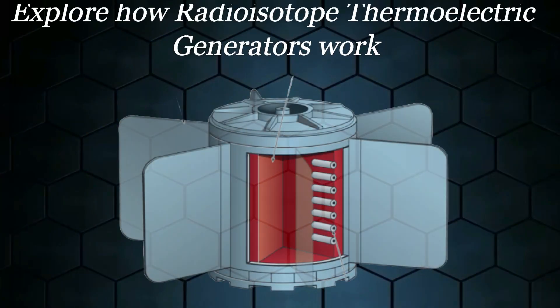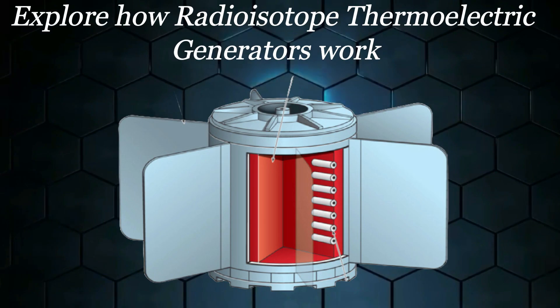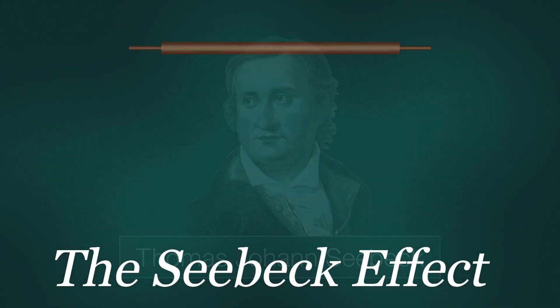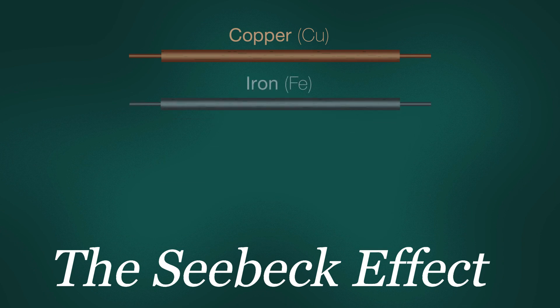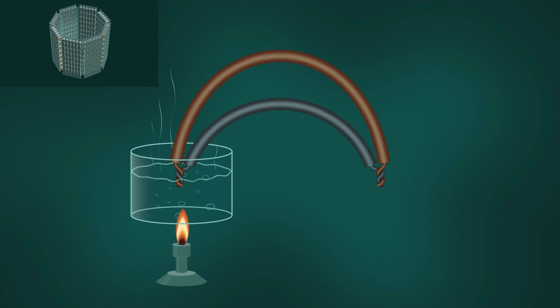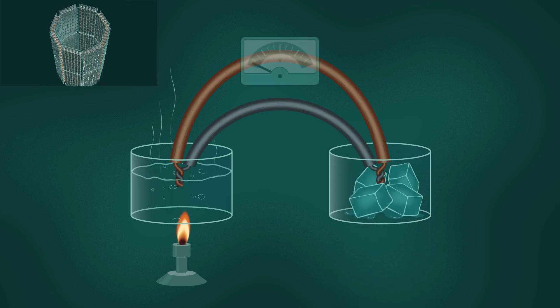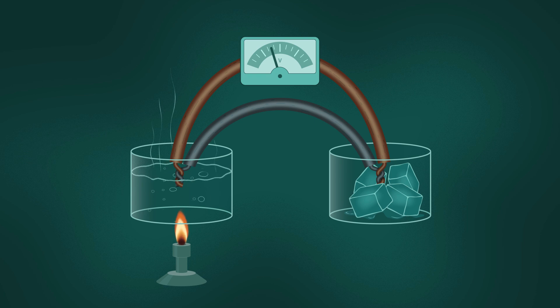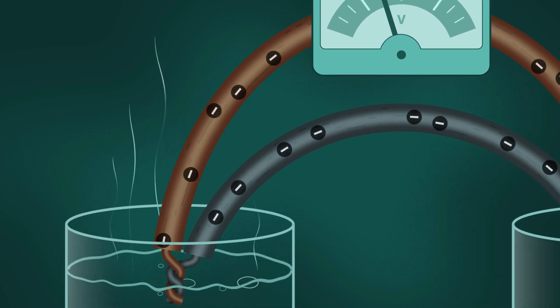Explore how radioisotope thermoelectric generators work. We now call this process of producing electricity the Seebeck effect. Today, we use the term thermocouple to describe the hundreds of small pairs of junctions made from different conducting materials that take advantage of this property. We now know that the greater the difference in temperature between the hot side and cold side, the greater amount of power that can be generated.